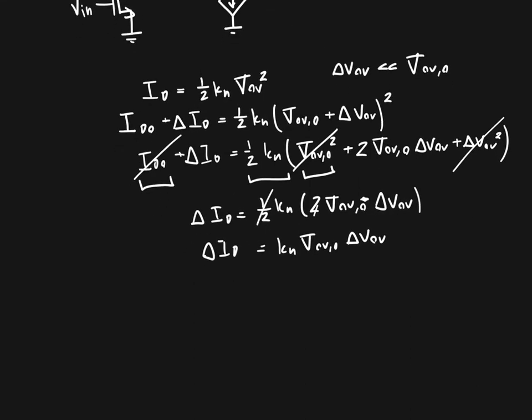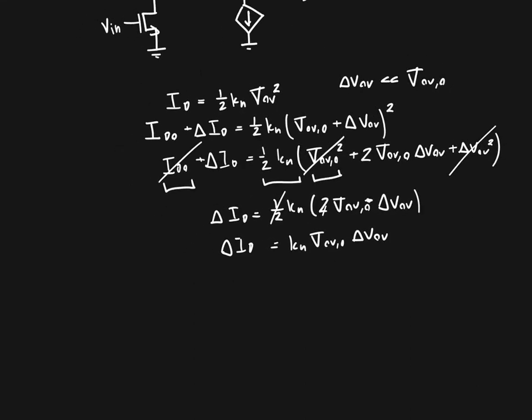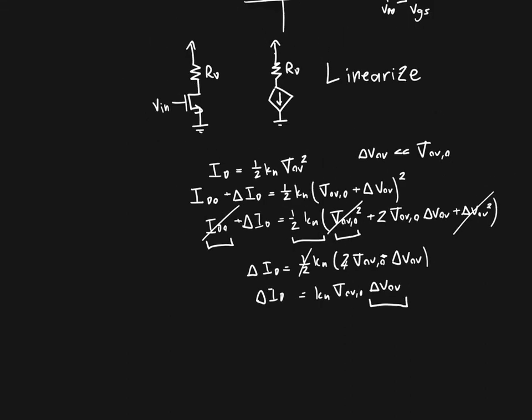That is our equation. This is now a linear equation in terms of our delta V overdrive voltage. As long as the change in overdrive voltage is much smaller than the DC value, we can treat our MOSFET as a linear circuit element. That's fantastic because that lets us use all the theorems we have at our disposal - circuit analysis. In general, a very good thing.